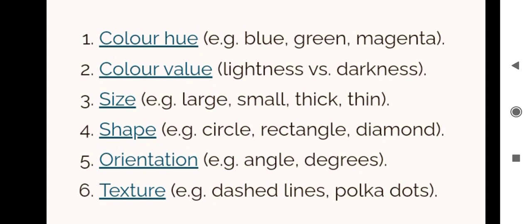Shape - circle, rectangle, diamonds. Some objects are shapeless also. Orientation means angles and degrees. The 45-degree angle plays a major role in real-time life - reflections work with the help of 45-degree angles. Texture - dashed lines and polka dots. Textures help analyze a graph.